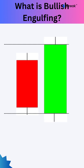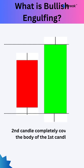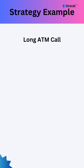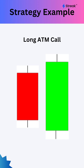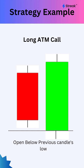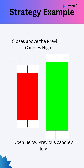A bullish engulfing pattern is formed when a candle completely engulfs its previous candle. In our sample strategy, we are going to take a long position on an at-the-money call option whenever a candle opens below the previous candle's low and closes above the previous candle's high on the Nifty index.